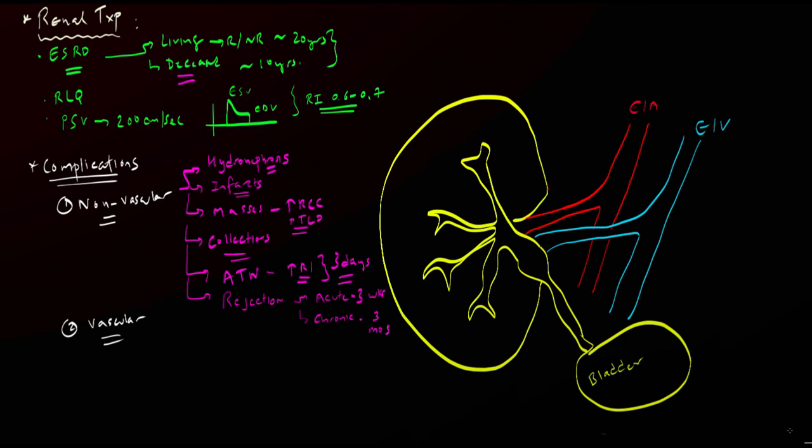Now let's shift gears and talk about the vascular complications of renal transplants. One way to think about it is just to think about the anatomy. We have a renal artery, we have a renal vein, either of those can get completely obliterated or thrombose, or can narrow or stenose. If we first start talking about the renal artery, the first complication we can think about is renal artery thrombosis.